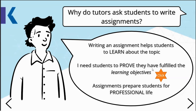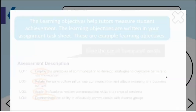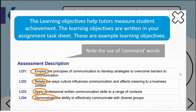The most important thing is that your tutors want you to prove you have fulfilled the learning objectives. Learning objectives are outlined in your course syllabus, in your weekly lectures, and also in your assignments. They help tutors measure your achievements. Example learning objectives use command words like employ, relate, apply, and demonstrate. The assignments help prove that you have fulfilled these learning objectives.